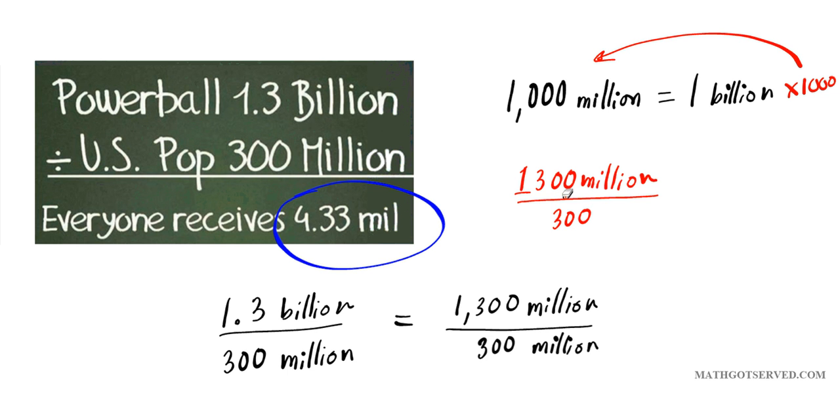This is incorrect. If we carry out this division right here, cancel out the zeros, you have 13 over 3 million. As a proper fraction, that is 4 and a third million.